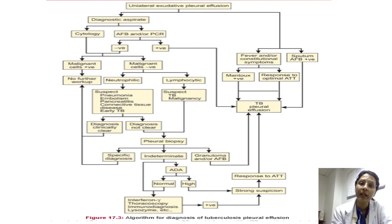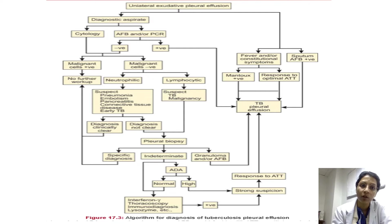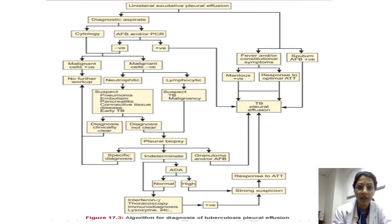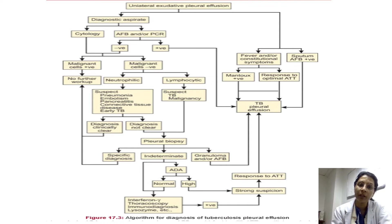For a unilateral exudative pleural effusion, a diagnostic aspirate is performed and sent for cytology, AFB, and/or PCR (CBNAAT). If negative, cytology for malignant cells is done. If malignant cells are absent and the fluid is lymphocytic predominant, tuberculosis is suspected. Ideally, a pleural biopsy or ADA measurement should follow. If the biopsy shows granuloma or AFB, or ADA is reasonably high, a diagnosis of TB pleural effusion is strongly supported.